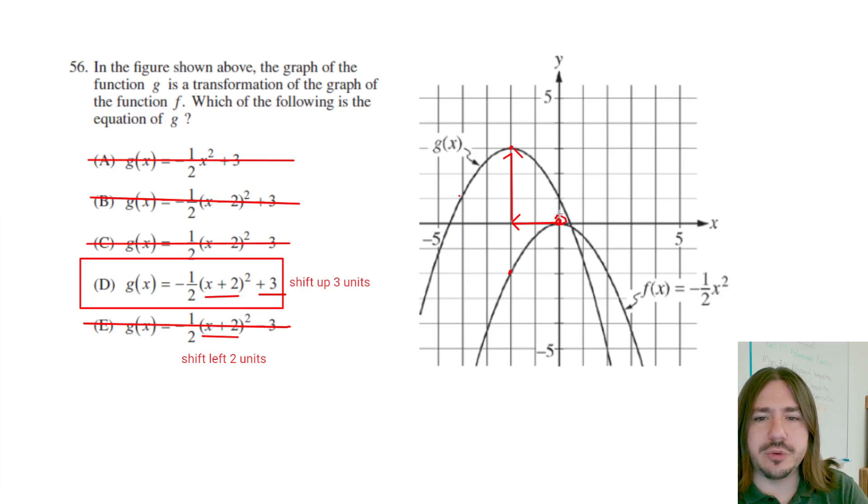Just make sure you understand the transformations. The left-right shifts do go sort of in the opposite direction that you might think. Since this is x plus 2, you might think it goes to the right. But no, unfortunately, it does go to the left. If it was x minus 2, it would go to the right. It does kind of go in the opposite direction that you might think.